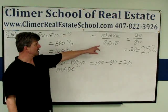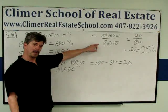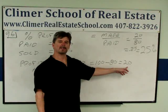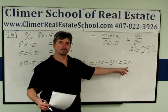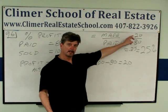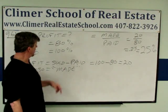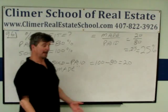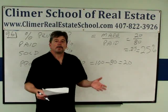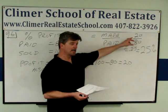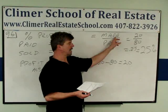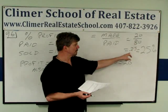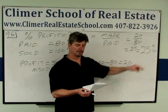Percentage profit is made over paid. So if we plug those in: how much did we make? 20. What did we pay for it, what was our cost? 80. Just keep your units the same. We have 20 over 80 — top number divided by the bottom number. 20 divided by 80 is 0.25, or 25%.